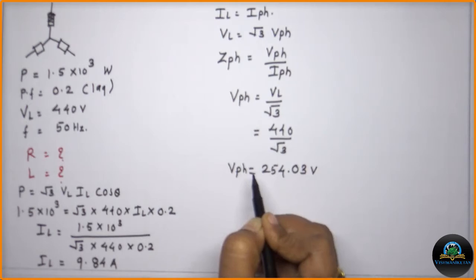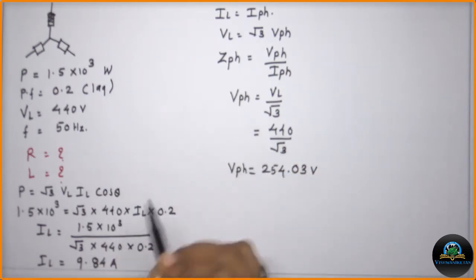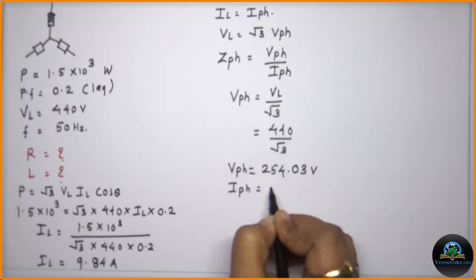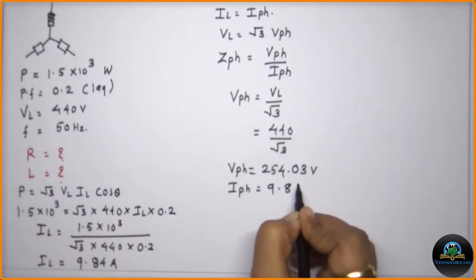This is nothing but my VPH. I already have the VPH now and the value of IL is equal to IPH. So IPH is equal to 9.84 amperes.